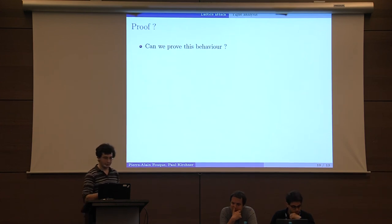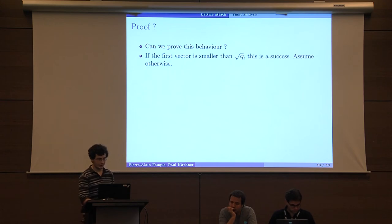Can we prove this behavior? Because the previous claims were heuristics. Turns out that a bit, yes. If the first vector has a norm smaller than square root of Q, then this is a success—we can efficiently decode. We can efficiently distinguish, so we can assume otherwise.